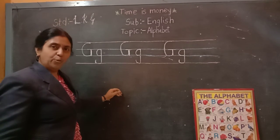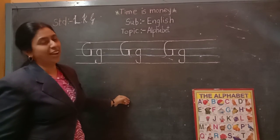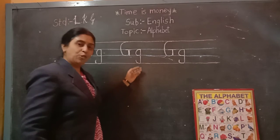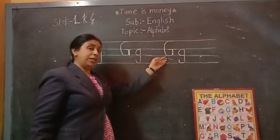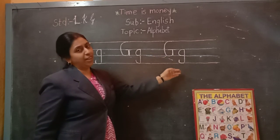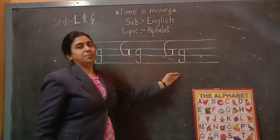Understand? Very good! Then you have to write this as classwork — full one page in your notebook. And while writing, you have to say and write: capital G and small g.